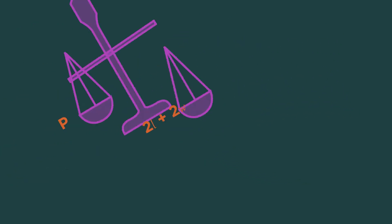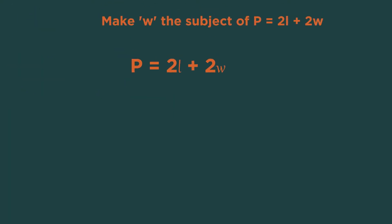So let's have a look at an example. Always start by moving the things that are least connected to our chosen letter. So here we move the 2L first. Opposite of plus 2L is minus 2L. So do that to both sides.